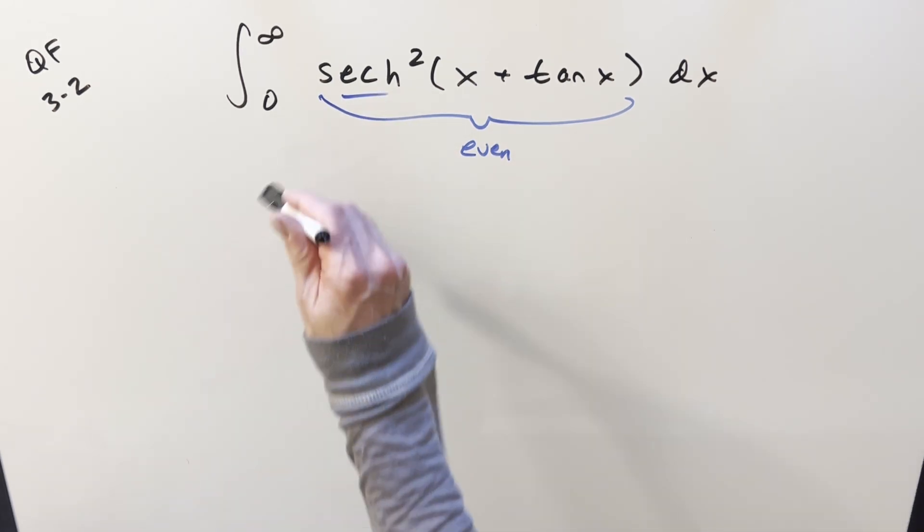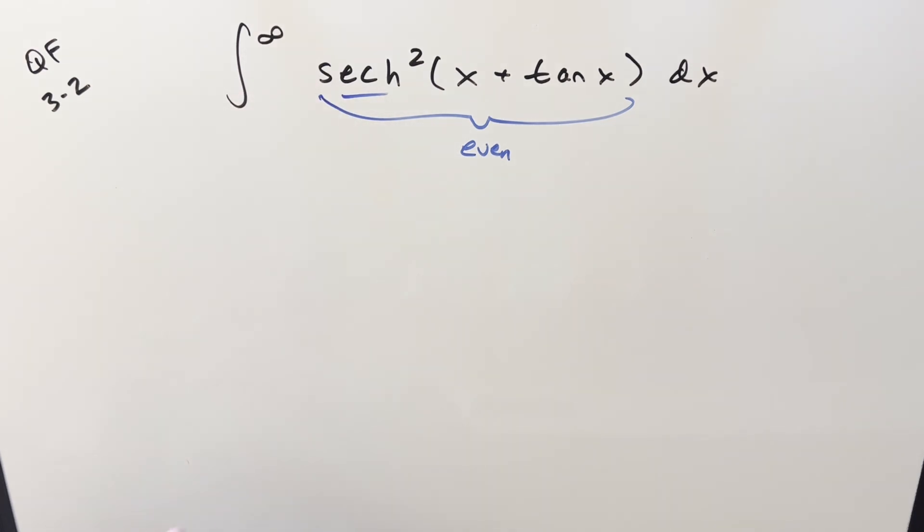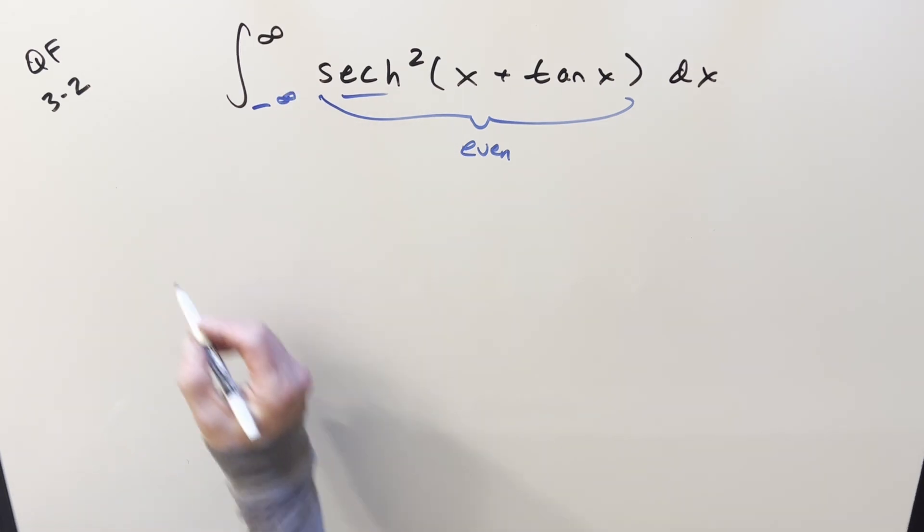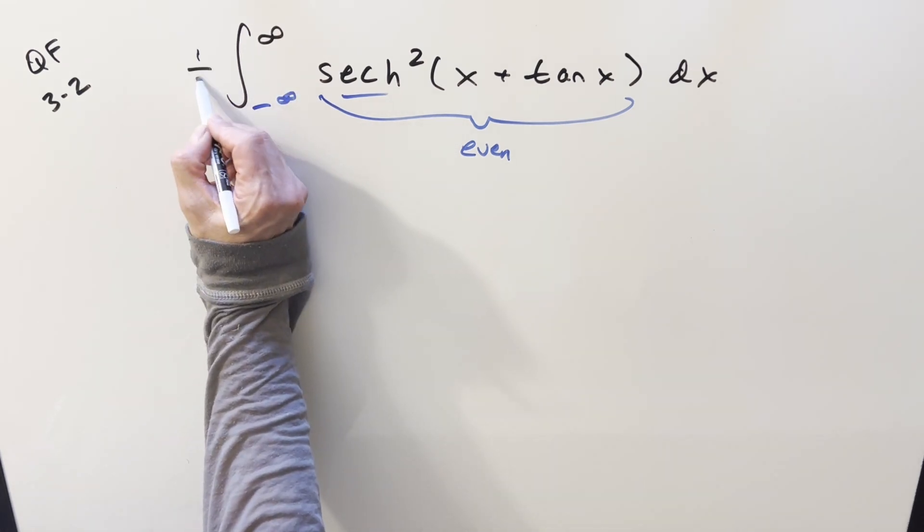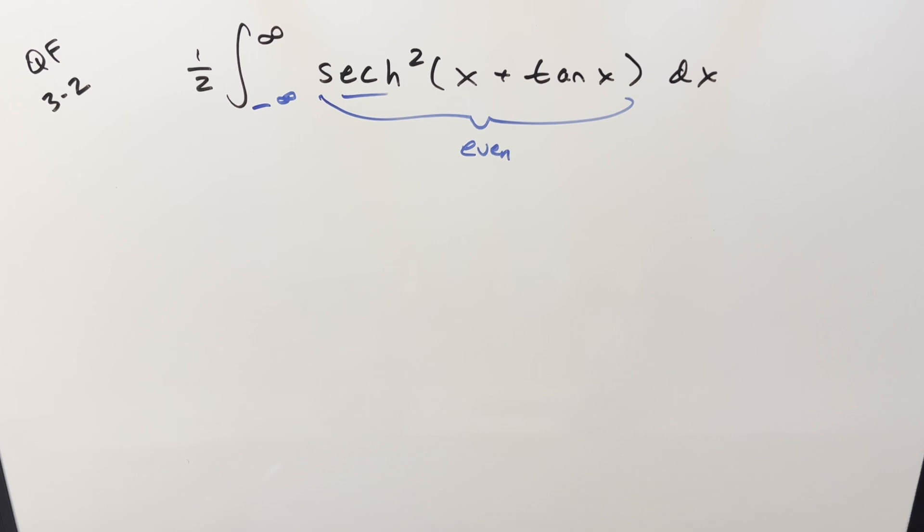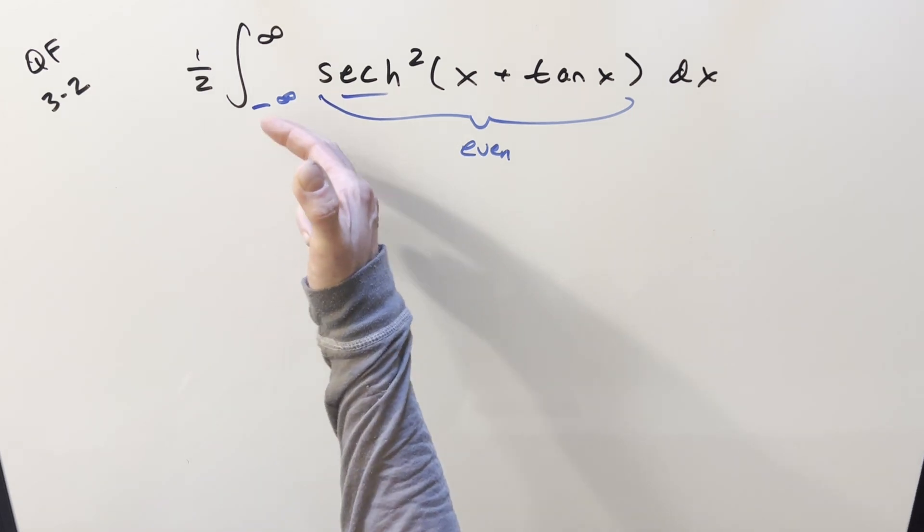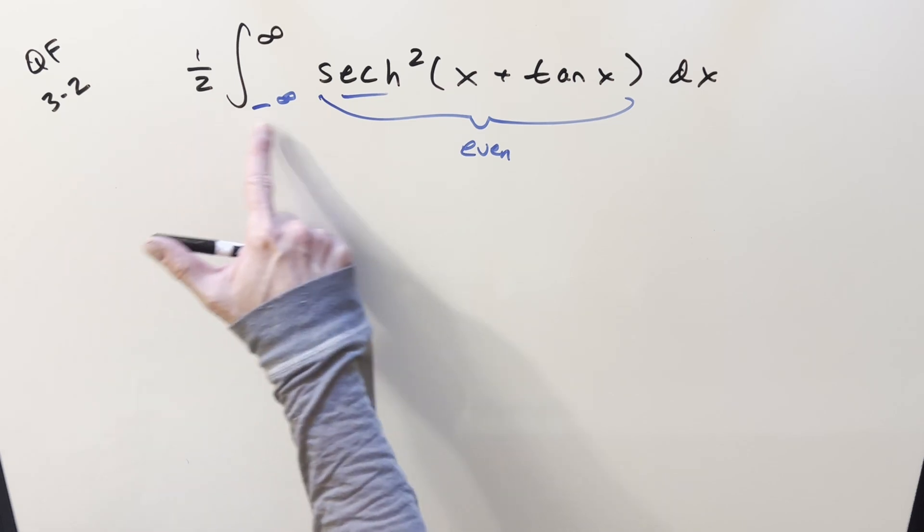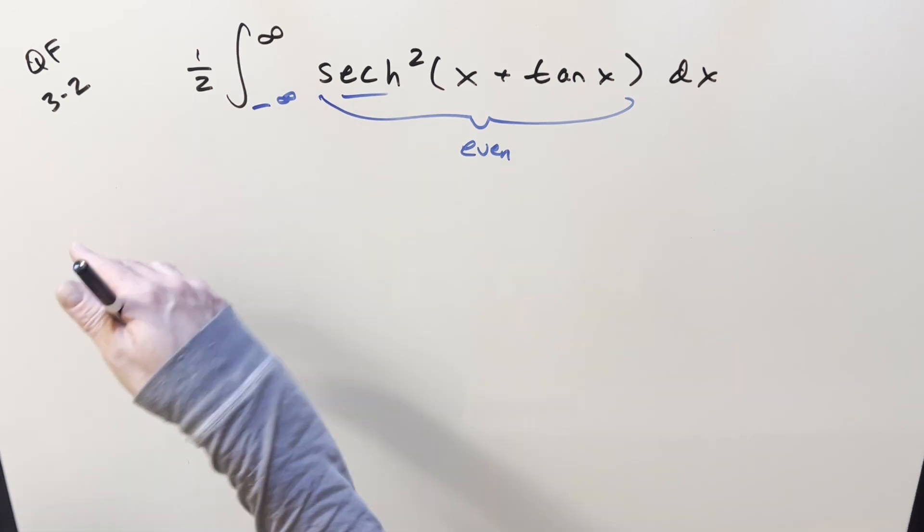So what that's going to allow me to do is I can change the bounds. Instead of going from zero to infinity I can write this as going from minus infinity to infinity and then I just need to bring the one half out front. Usually we do this trick the other way when we've got symmetric bounds around zero and we've got an even function. We'd bring a two out and change this to zero. I'm just doing that same thing in reverse.